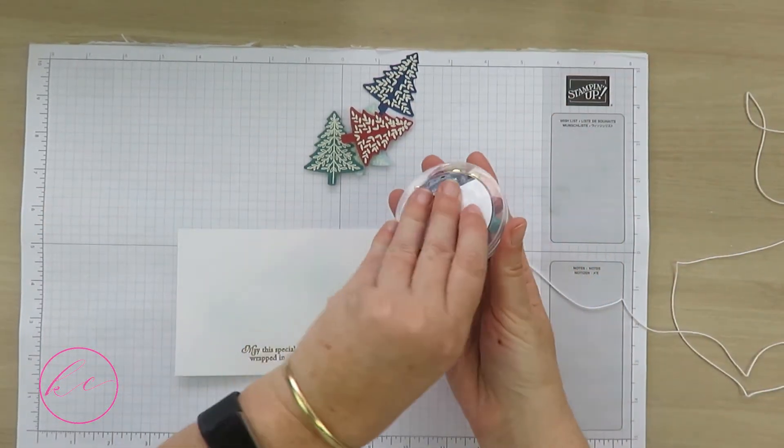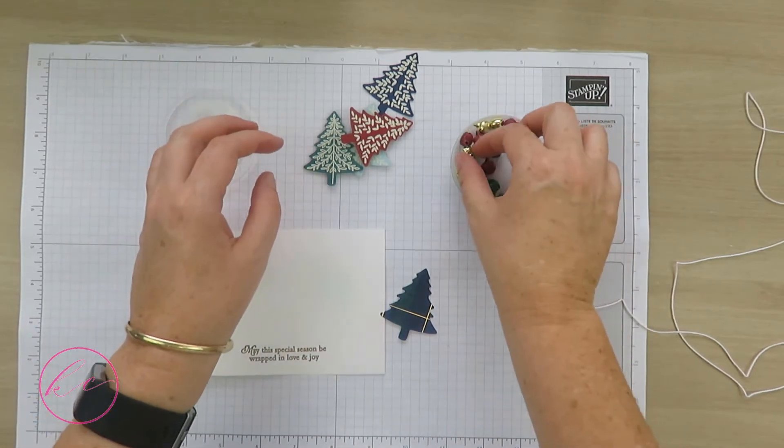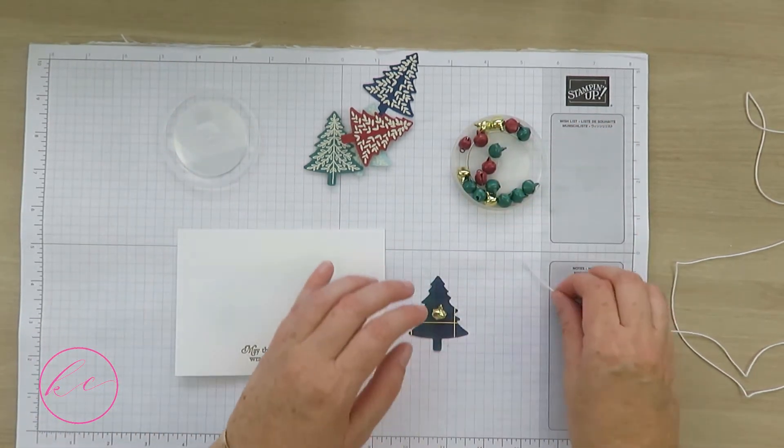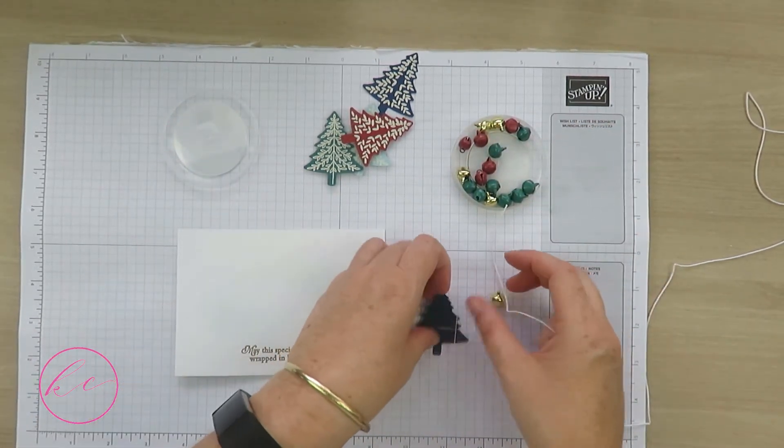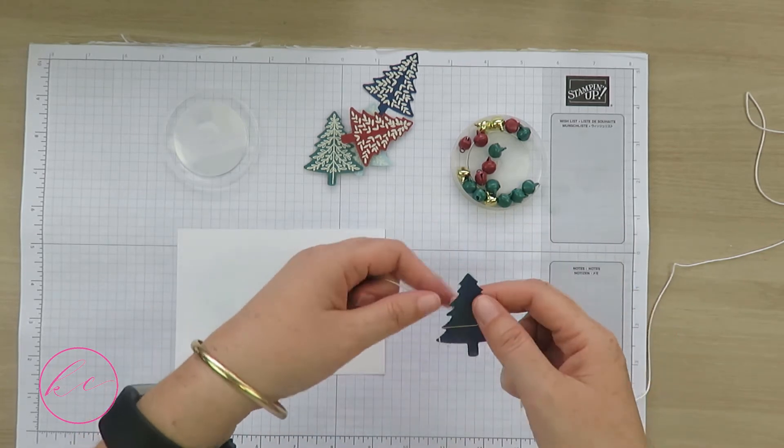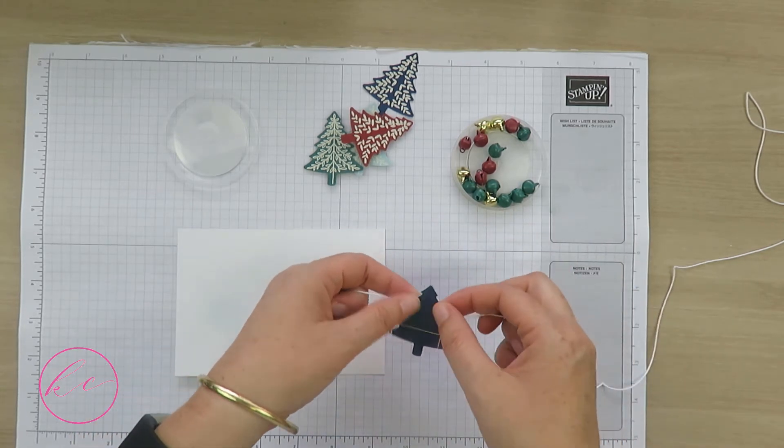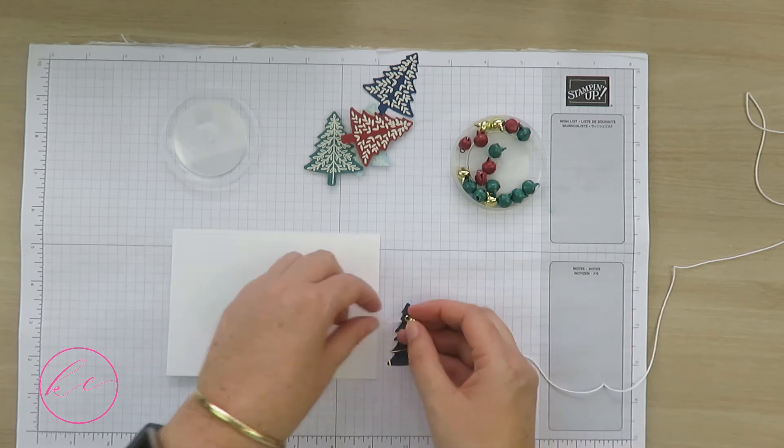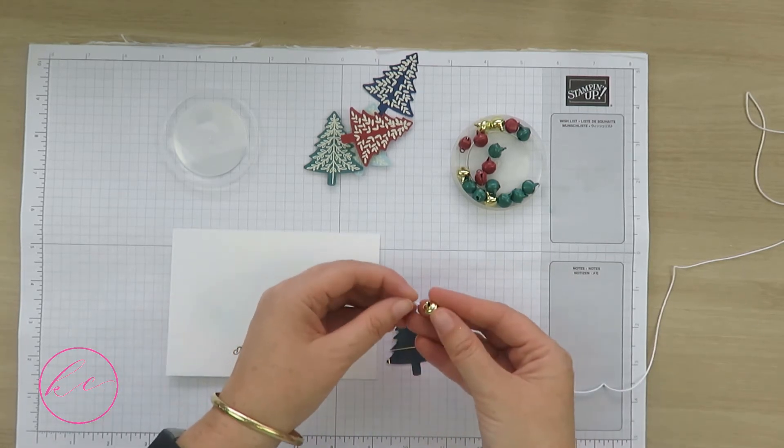I'm going to add some jingle bells, these cute little bells, to this tree here. I've got some white linen thread, so I'm just going to wrap this around my tree with my bell and tie that into a bow.